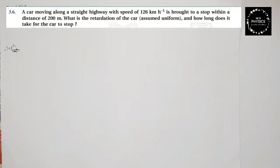Hello students, exercise 3.6 — look at the question first. A car moving along a straight highway with the speed of 126 kilometers per hour is brought to a stop within a distance of 200 meters. What is the retardation of the car, assuming it is uniform? And how long does it take for the car to stop?